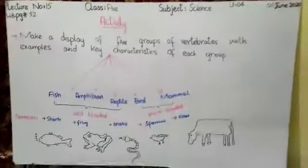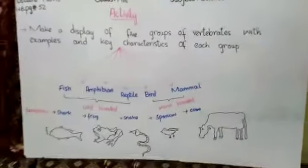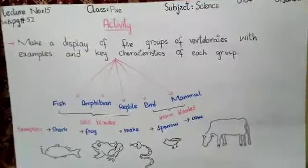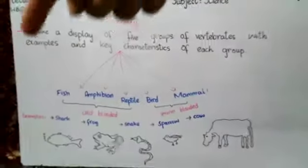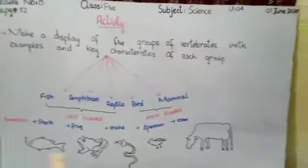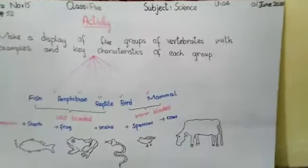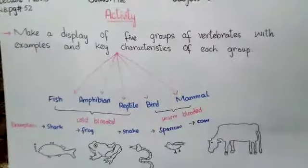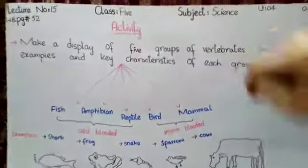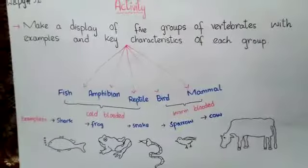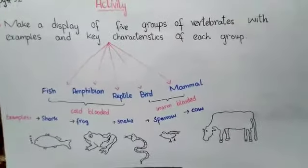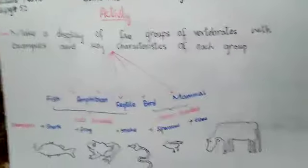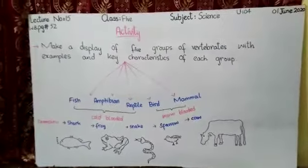This is all about this activity. I have provided you all the information and guided you. Now make a nice display ready for the five groups of vertebrates. Write the five groups, give examples, and include the key characteristics: whether they are cold or warm-blooded, what covers their body, their habitat, how they breathe, and how they reproduce. Allah Hafiz.